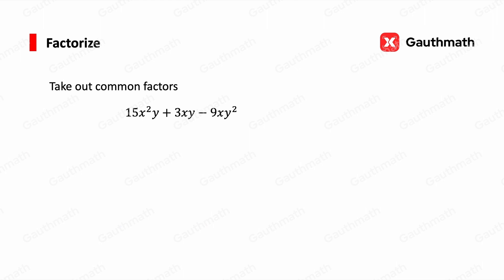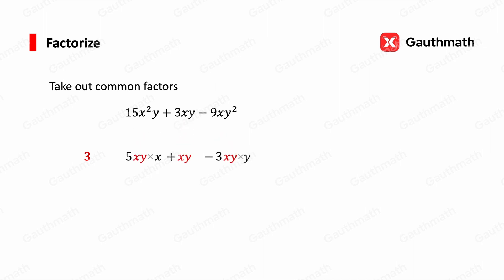Now let's move on to factorization. The simplest way to factorize an expression is taking out common factors. For this expression, we look at the coefficients 15, 3, and −9, which can be written as 3×5, 3, and −3×3 — they all share a factor of 3. For the variables, x²y = xy·x and xy² = xy·y, so all three terms share xy. Taking out 3xy, the expression becomes 3xy(5x + 1 − 3y).